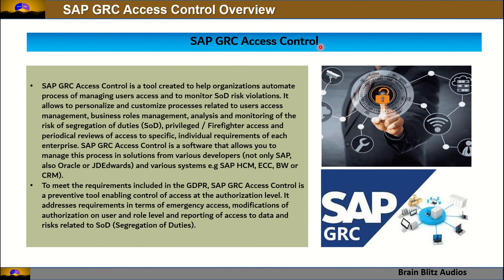SAP GRC Access Control is a tool created to help organizations automate processes of managing user access and to monitor SOD risk violations. It allows you to personalize and customize processes related to user access management, business role management, analysis and monitoring of segregation of duties (SOD) risks, privileged or firefighter access, and periodical reviews. It manages these processes across solutions from various developers — not only SAP, but also Oracle or JD Edwards — and systems such as SAP HCM, ECC, BW, or CRM.